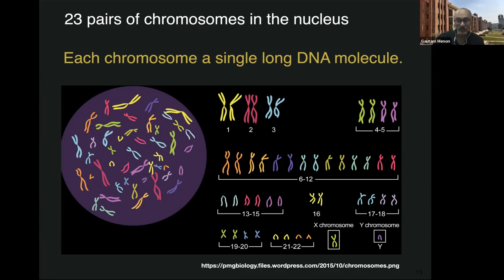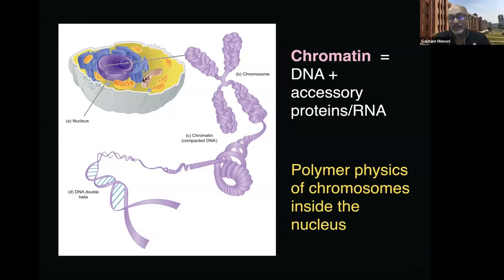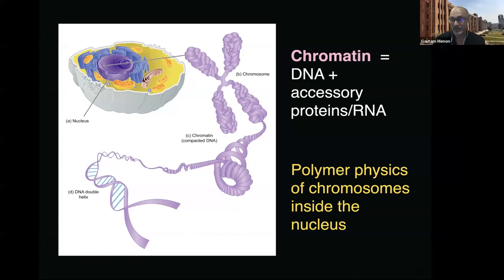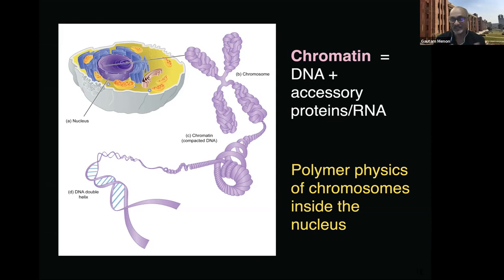A useful term here is chromatin — DNA plus accessory proteins plus RNA, basically any stuff that binds to DNA within the nucleus. We've now abstracted our physics problem: we should consider the polymer physics of chromosomes inside the nucleus. We've started with the large picture of what modeling ought to be doing — soft matter, constrained in a biological context, out of equilibrium — and we've zoomed in to say we want to understand what chromatin is doing inside the nucleus.